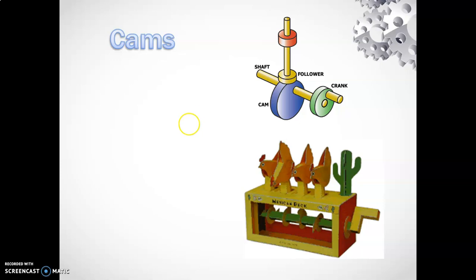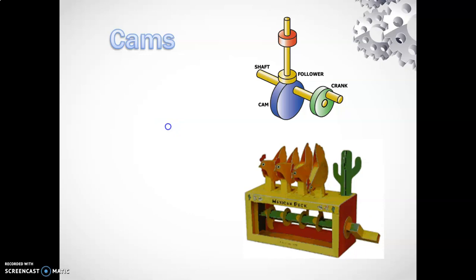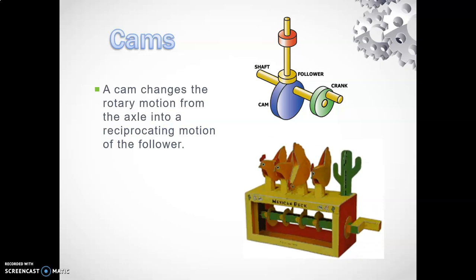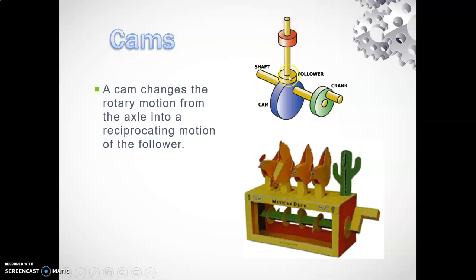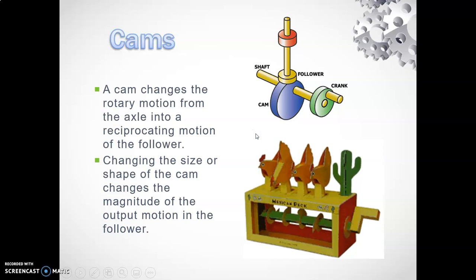Let's start with cams today. This is the more simple type of mechanism, and hopefully you have some familiarity from previous projects like this little cam toy. Cams change rotary motion on the axle to reciprocating motion in the follower. By changing the size or shape of the cam, you change the magnitude of the output motion in the follower.